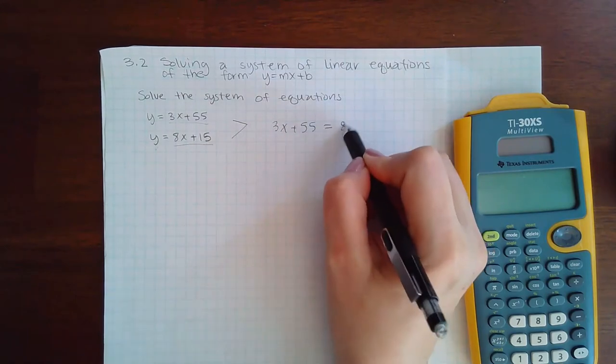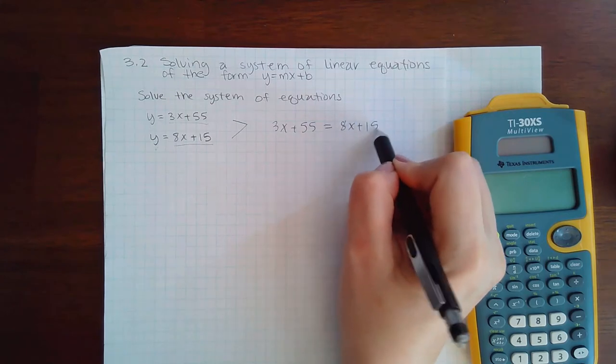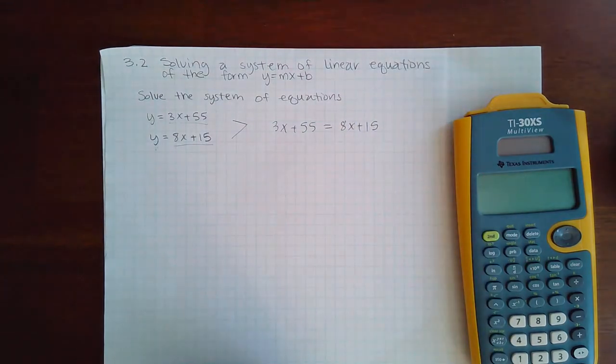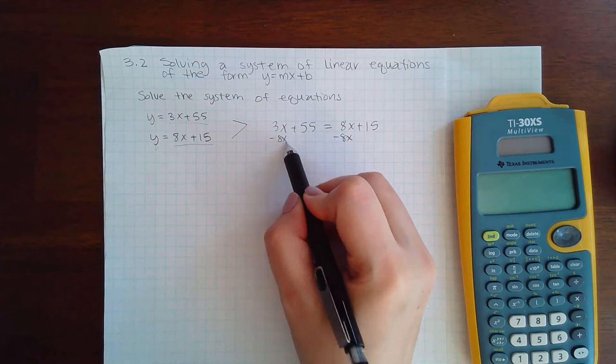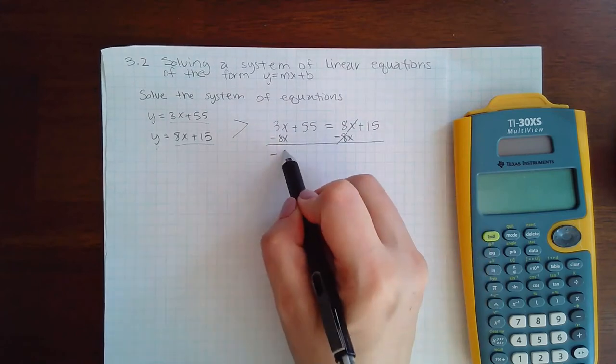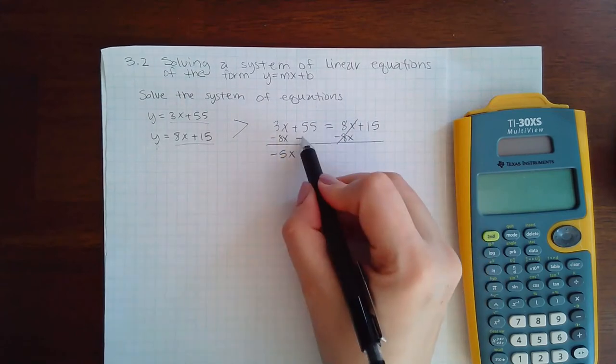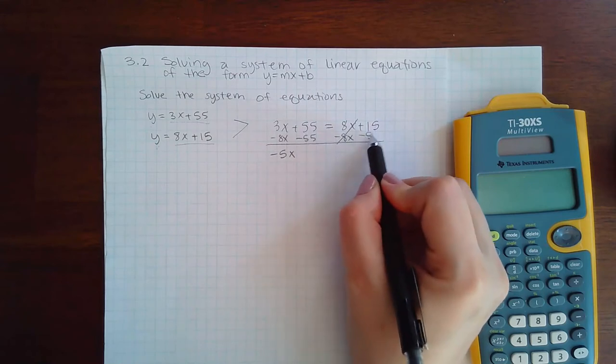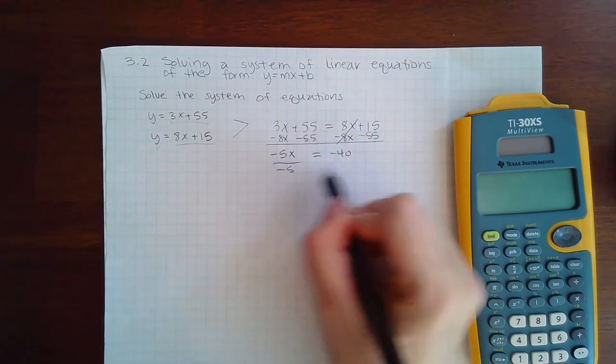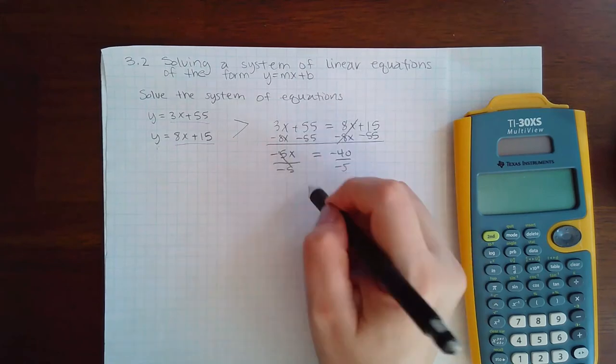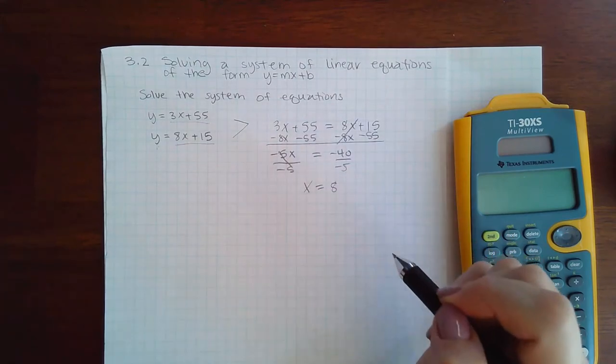to be equivalent to the second expression, because y equals y. So then, if I solve this equation, I get negative 5x. If I minus 55 on the other side, I get negative 40. Divide by negative 5, I get x equals 8. But we